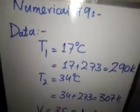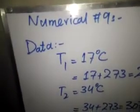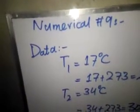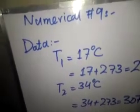Assalamualaikum and welcome. Today we will do numerical number 9 and 10. This is numerical number 9. The statement is: a sample gas occupies a volume of 35 decimeter cube at 17 degrees Celsius. If the gas temperature rises to 34, would you expect the volume to double? If not, calculate the new volume.